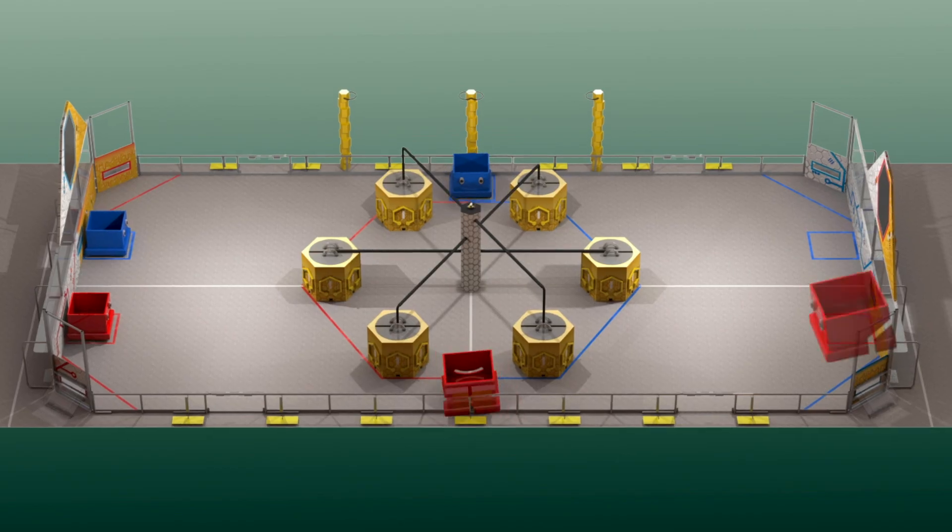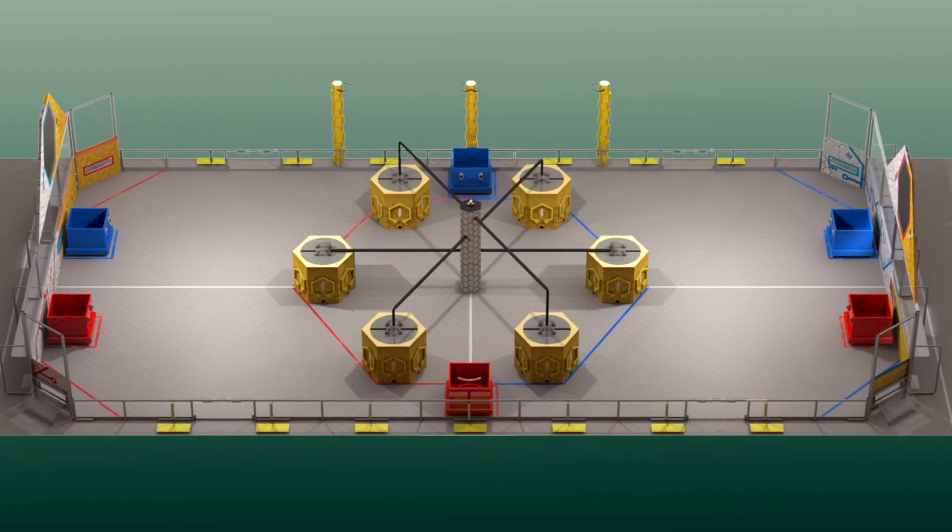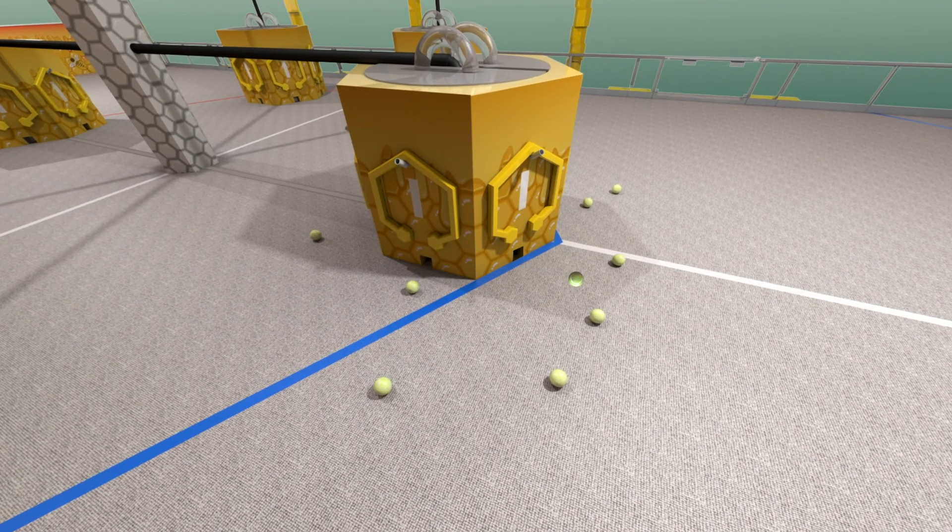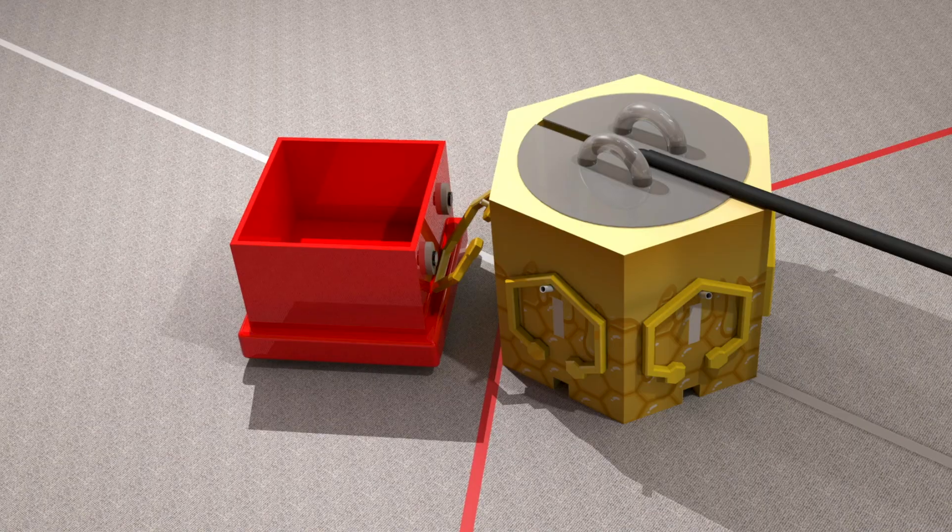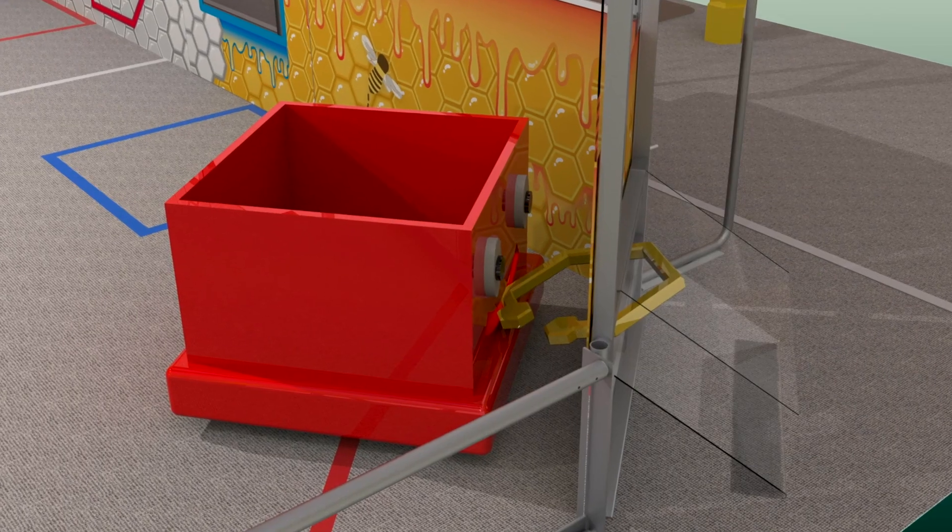Beekeepers have deployed six robotic drones onto the field in order to save the hive. Drones must pick up and collect nectar by shooting it onto a velcro surface and pass combs to their alliance beekeepers for linking.